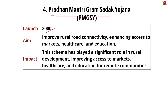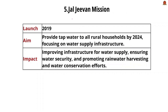The next initiative is Pradhan Mantri Gram Sadak Yojana, launched in 2000, currently in Phase 4. The aim is to improve road connectivity in rural areas by providing all-weather roads to unconnected villages. By providing rural road connectivity, it enhances access to healthcare and education in rural areas.